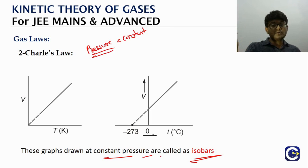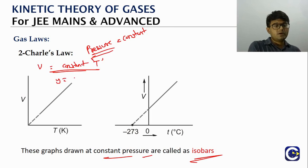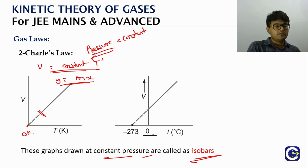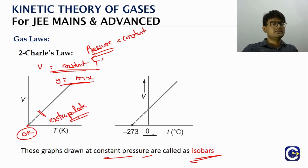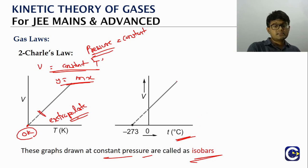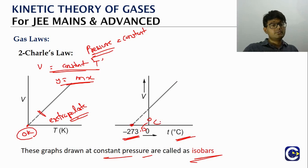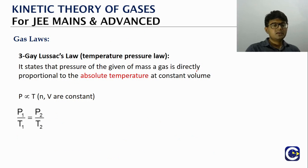No gas can actually reach zero kelvin, so the graph has to be extrapolated. On the Celsius scale, this straight line would touch the x-axis at −273.15°C, which is absolute zero. At that temperature, the volume becomes zero. This is the graphical representation of Charles' law.